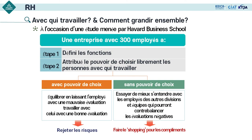Les ressources humaines sont un sujet difficile à traiter. Harvard Business School a donc mené une étude : « Avec qui travailler ? » Les chercheurs ont fait une expérience dans une entreprise avec 300 employés, en attribuant aux employés le pouvoir de choisir librement les personnes avec qui travailler. Ils comparent les deux cas — quand les employés ont le pouvoir de choisir, ils préfèrent travailler avec celui qui peut leur donner une évaluation positive. Dans le deuxième cas, ils s'entendent avec les employés d'autres divisions.